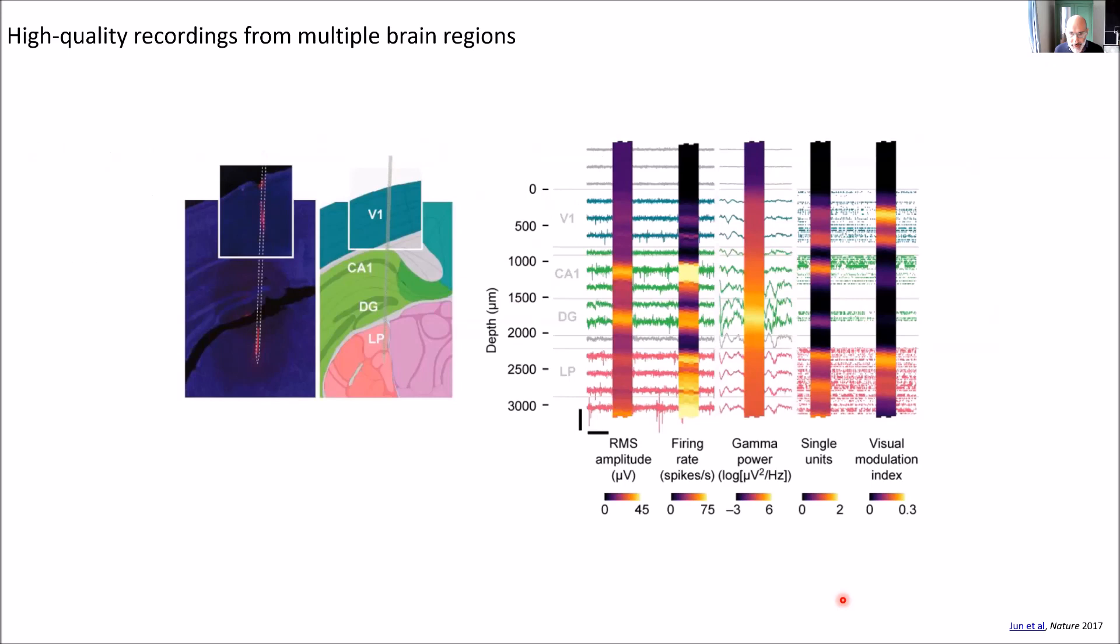Here's an example of a penetration that goes through primary visual cortex, CA1 in hippocampus, dentate gyrus, and LP thalamus. It's about 3000 microns. You can look at the RMS amplitude of the spikes in microvolts, the firing rate in spikes per second, how much gamma power there was at different depths, how many single neurons you got in different depths, and what was the visual modulation index.